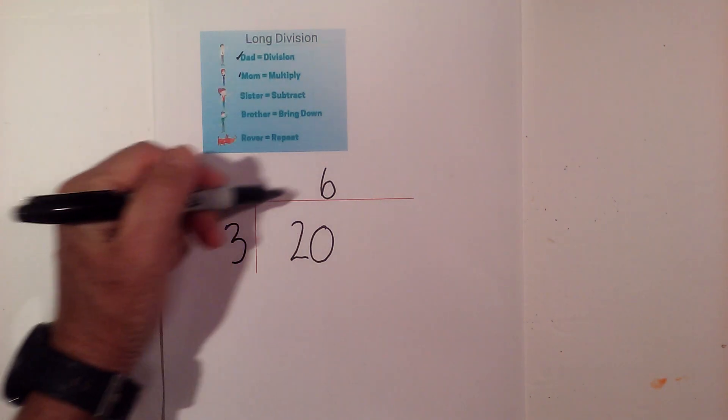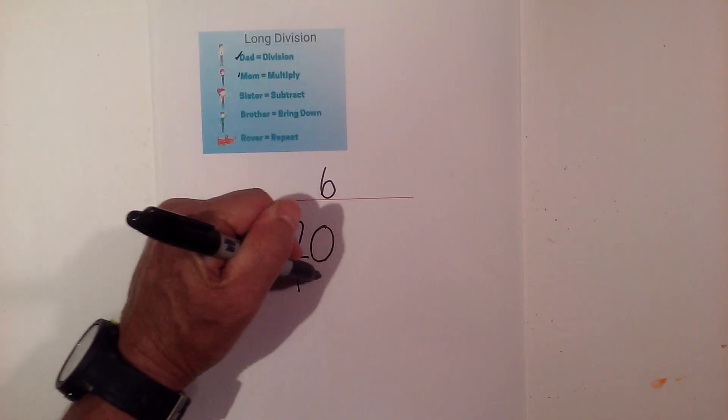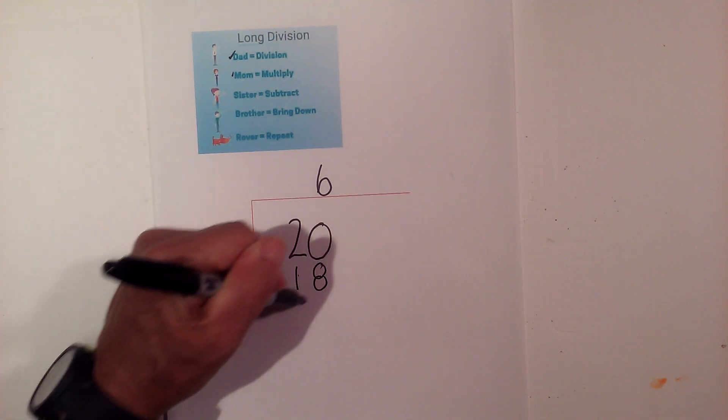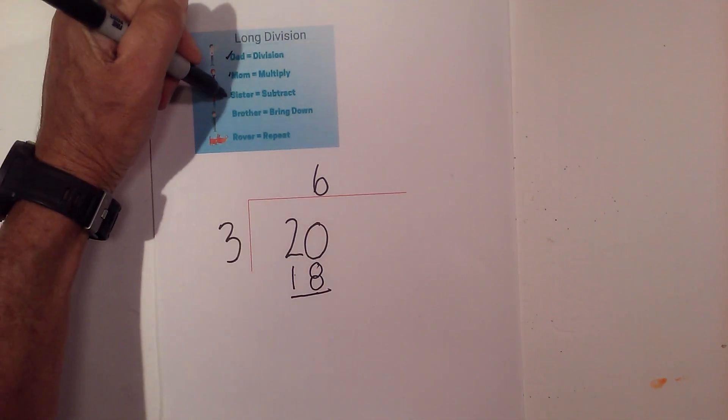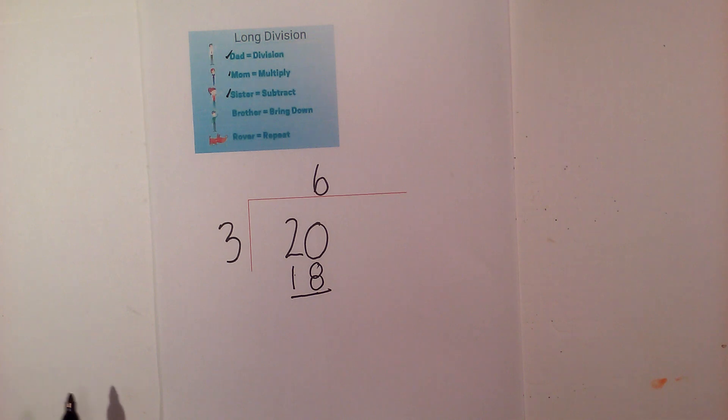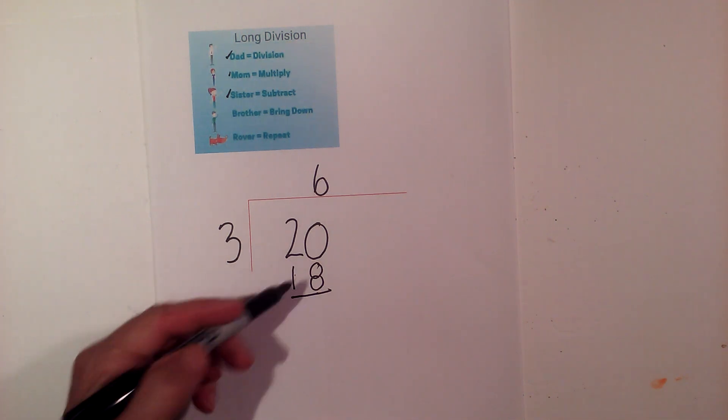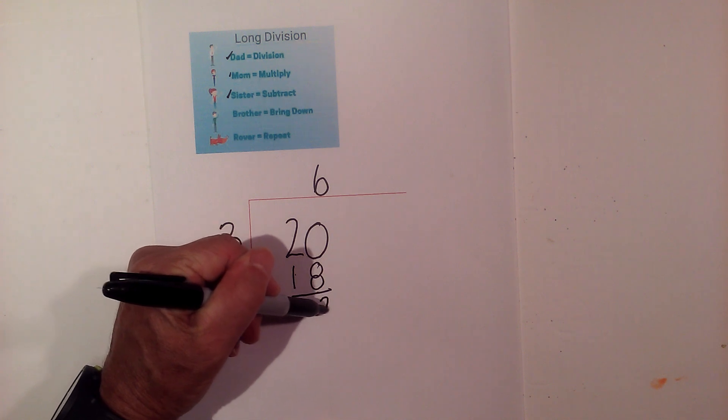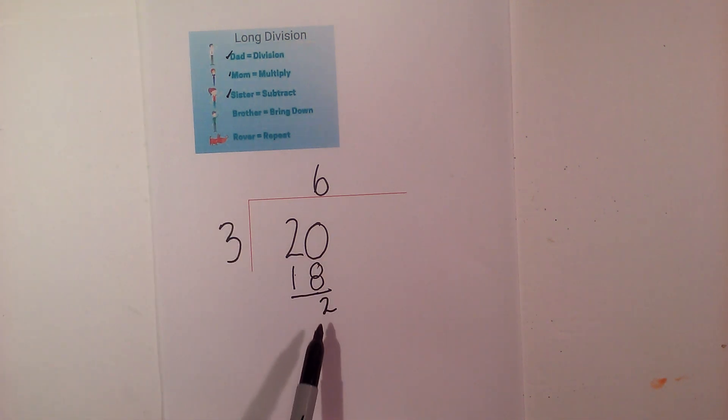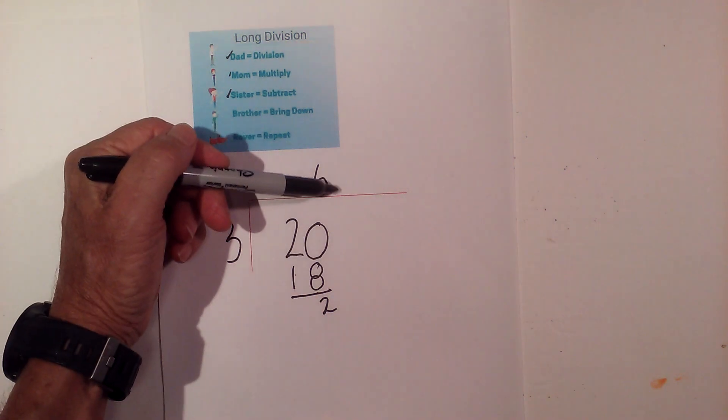6 times 3 is 18. Next I move down to sister, so I subtract. 20 minus 18 is 2. Now since I have a 2 here, I am not finished because it did not go into it evenly. But right now I don't have a number to bring down.